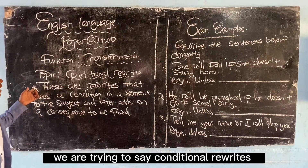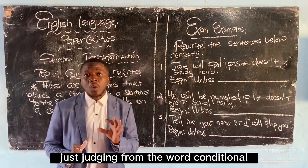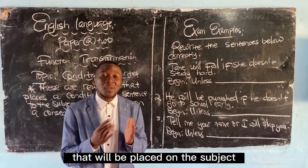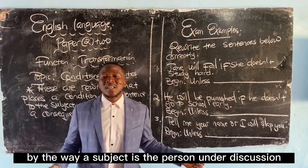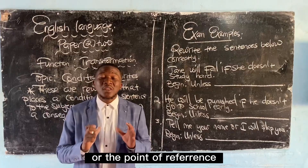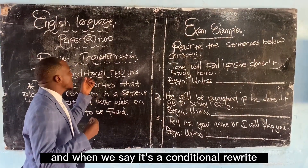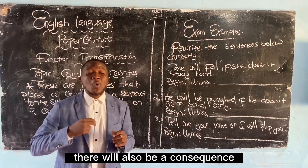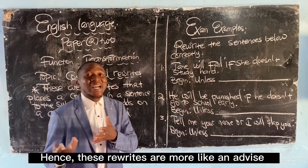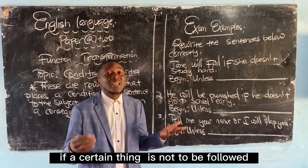Here we are trying to say conditional rewrites. Just judging from the word 'conditional,' it means in this sentence there will be a condition placed on the subject — the subject being the person under discussion or the point of reference. And when we say it's a conditional rewrite, there will also be a consequence. Hence, these rewrites are more like advice based on the things that should be faced if a certain thing is not to be followed.